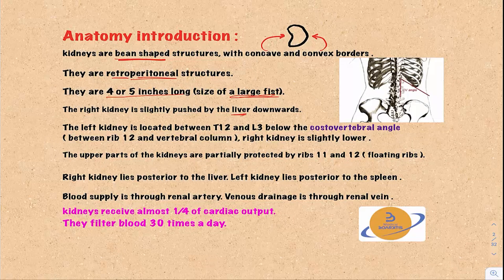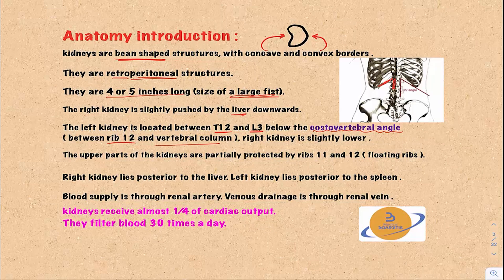The left kidney is located between T12 and L3, and this area is called the costo-vertebral angle, located between rib 12 and the vertebral column. This is where the kidneys are situated. The right kidney is slightly lower than the left kidney because of the liver.